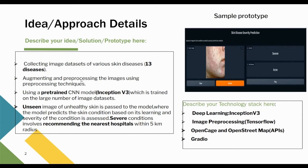We use a pre-trained model known as Inception V3, which has already been trained on a large number of datasets. This pre-trained model is utilized for skin disease detection, where it is trained on the augmented, pre-processed images, and then used for skin disease prediction. An unseen image is passed to the model to predict what the possible skin condition could be, as seen in the sample prototype.